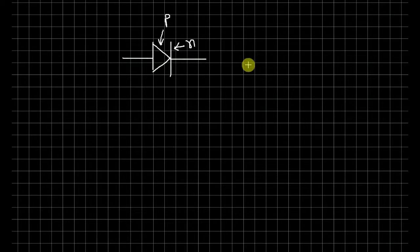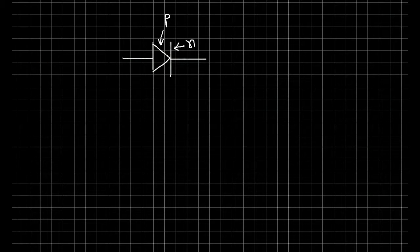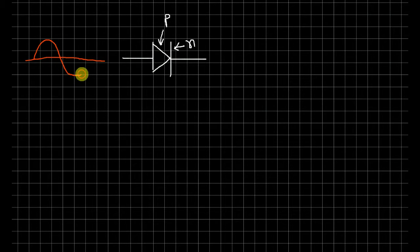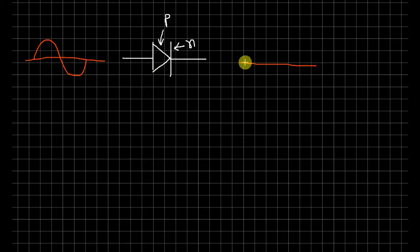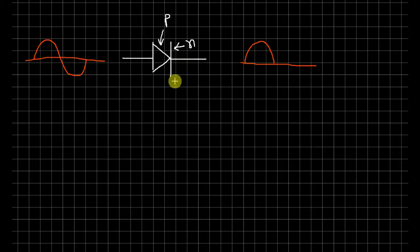Suppose I have a diode with an AC source as input. The AC source is connected to the diode input, and we observe the output for only half of each cycle.